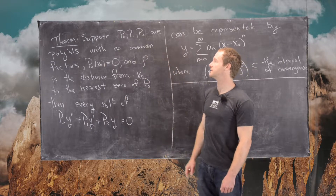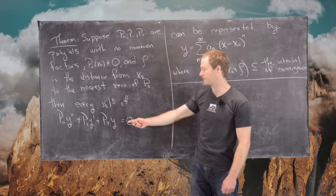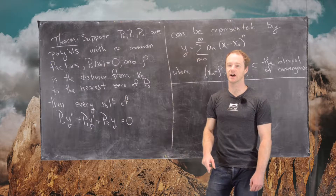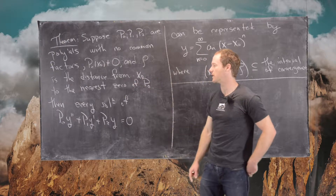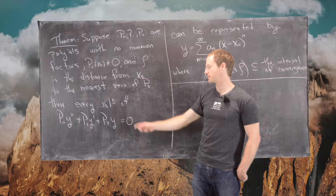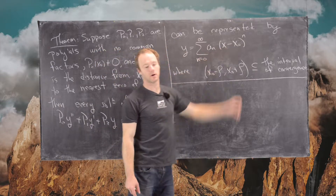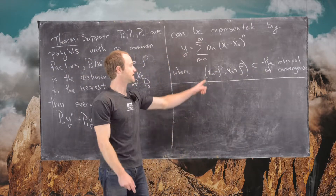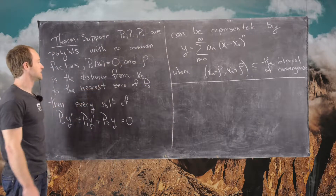Suppose P₀, P₁, and P₂ are polynomials with no common factors, and P₀(x₀) is not equal to zero — in other words, x₀ is an ordinary point — and ρ is the distance from x₀ to the nearest zero of P₀. Then every solution of P₀y'' + P₁y' + P₂y = 0 can be represented by a power series based at x₀, and the interval of convergence contains the open interval (x₀ − ρ, x₀ + ρ).